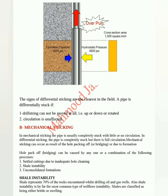Mechanical sticking. In mechanical sticking, the pipe is usually completely stuck with little or no circulation. In differential sticking, the pipe is completely stuck but there is full circulation. Mechanical sticking can occur as a result of the hole packing off, or bridging, or due to formation.